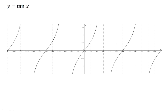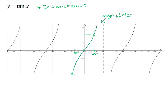The graph y equals tan x is actually a discontinuous graph — it doesn't have the same continuous flow that the sin and cos graphs have. Because it is discontinuous, it has asymptotes, whereas the cos and sin graphs do not. The tan of 0 is 0, and the tan of 45 degrees is positive 1, so we have a point at 45 degrees and 1, and a point at negative 45 degrees and negative 1. Connecting those points with a smooth curve gives us the shape of y equals tan x.